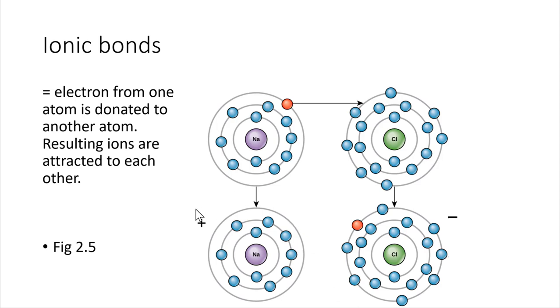Consequently, this is going to be attracted to this. By the way, these are called ions now. An atom that has a charge is called an ion, so this positive ion is going to be attracted to this negative ion, and that's called an ionic bond, that attraction between them.